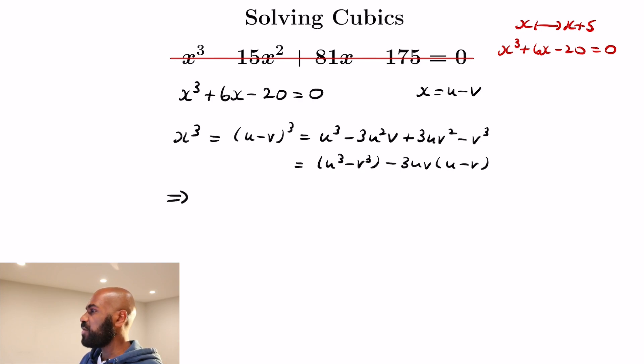So if you rearrange this, this tells us that x cubed plus 3uv times x minus the quantity u cubed minus v cubed is identically 0. Well, that looks very much like our original cubic equation.